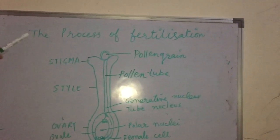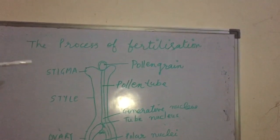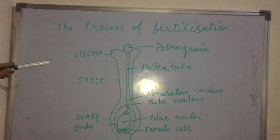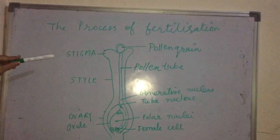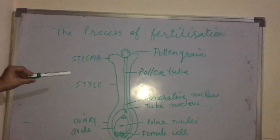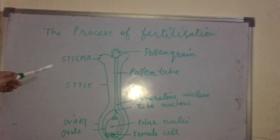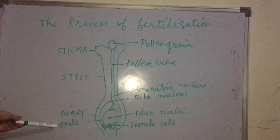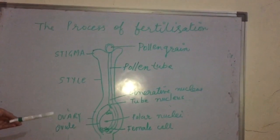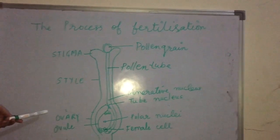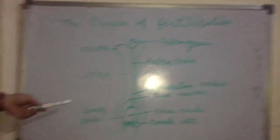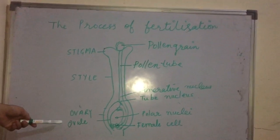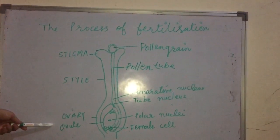This is the entire process of fertilization. Once fertilization has taken place, all the other parts of the flower — stigma, style, the stamen, sepals, petals — they all fall off. Only the ovule remains. The ovule remains attached to the stalk of the flower and it turns into a fruit, and the ovule becomes the seed.